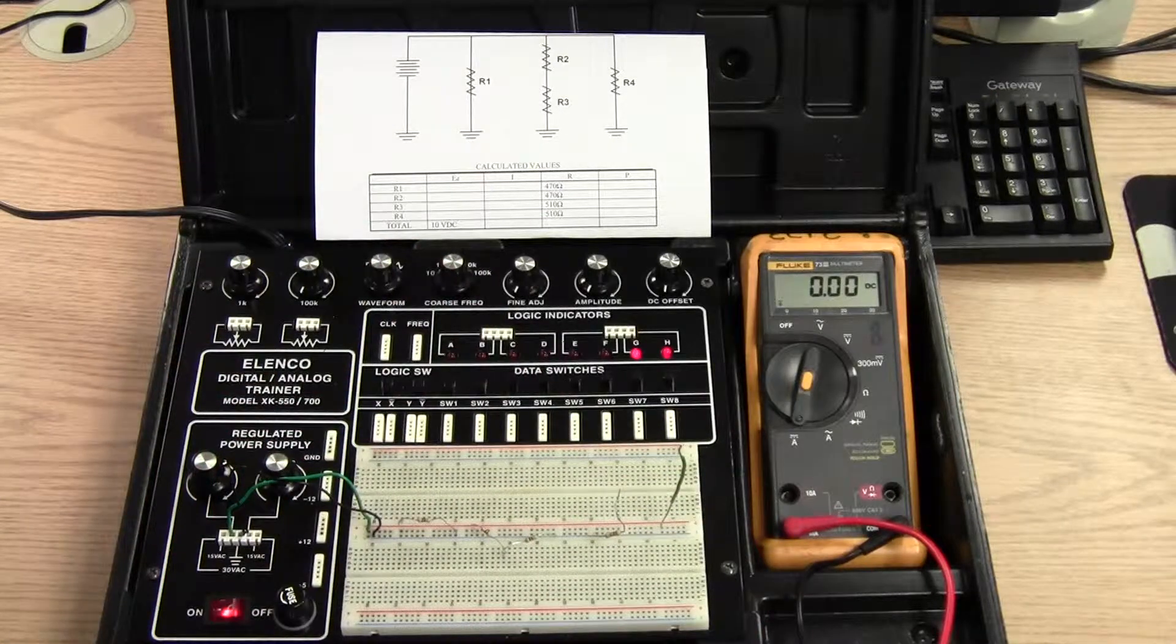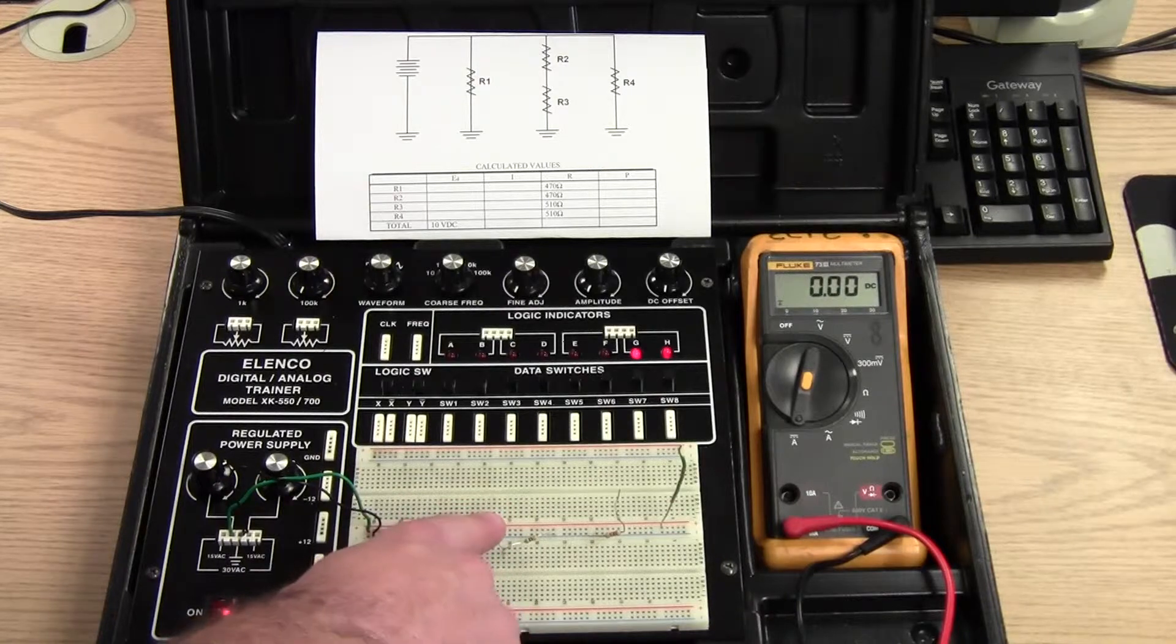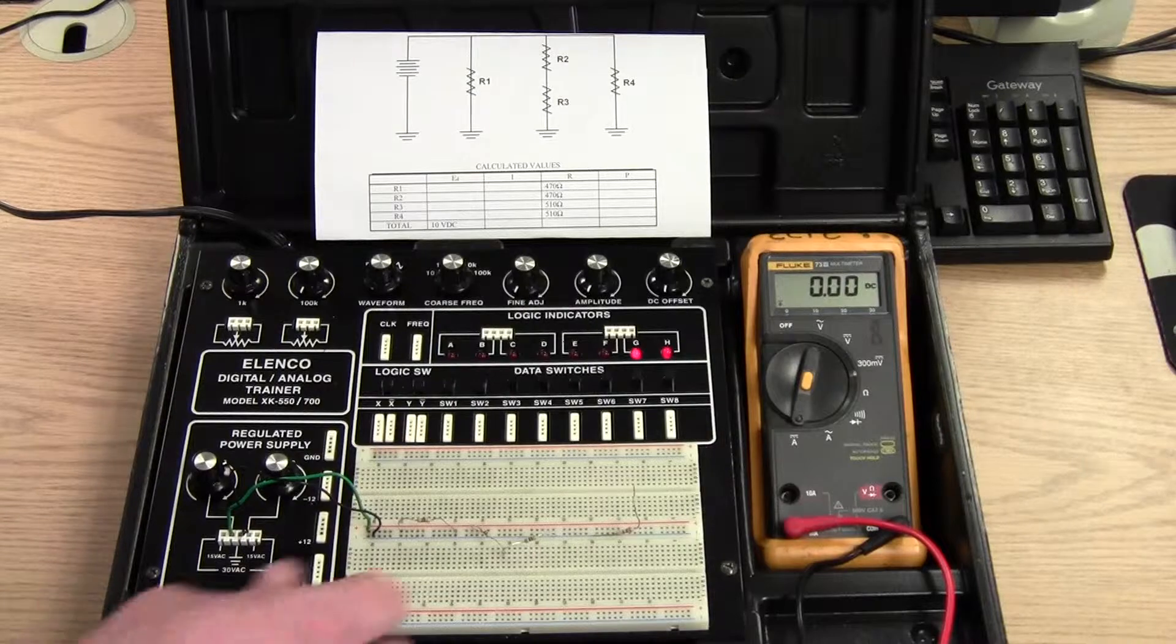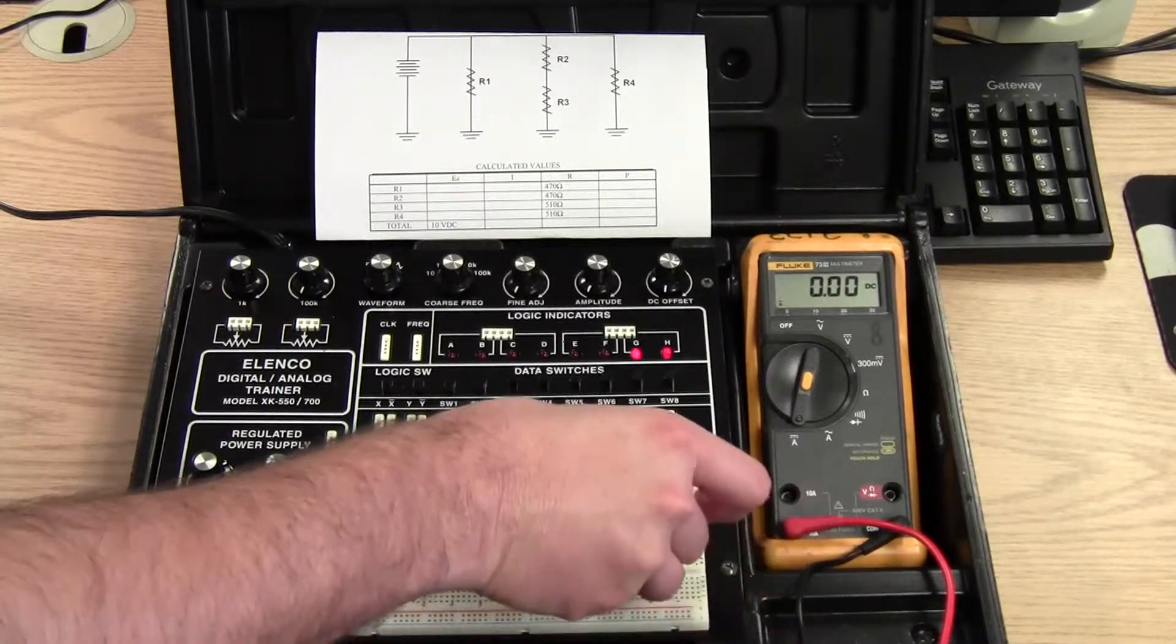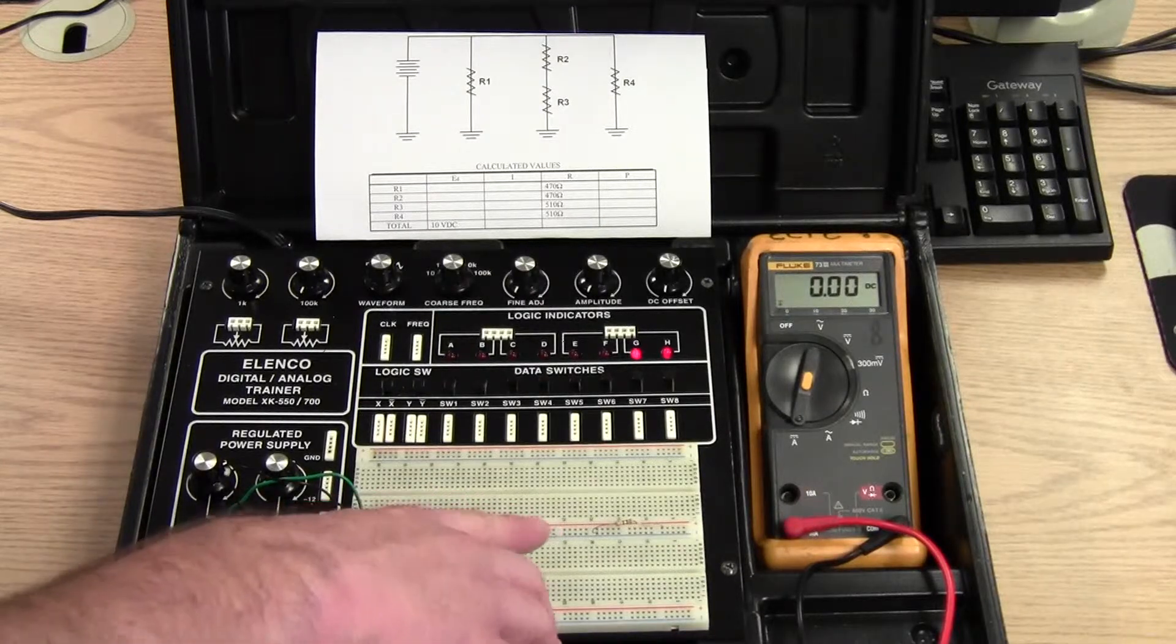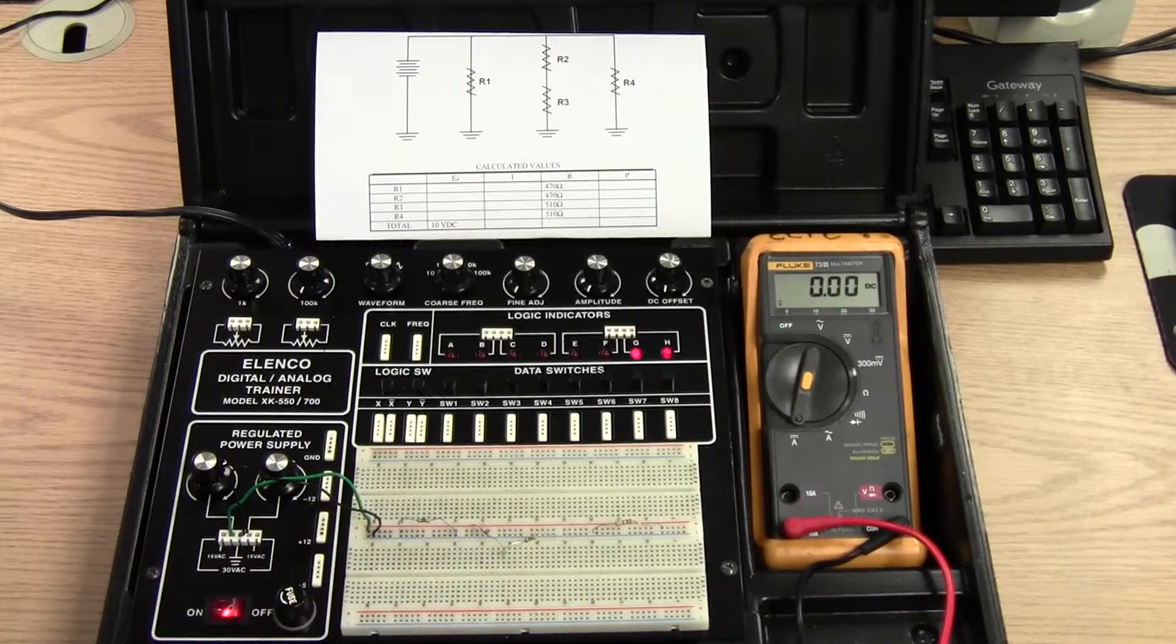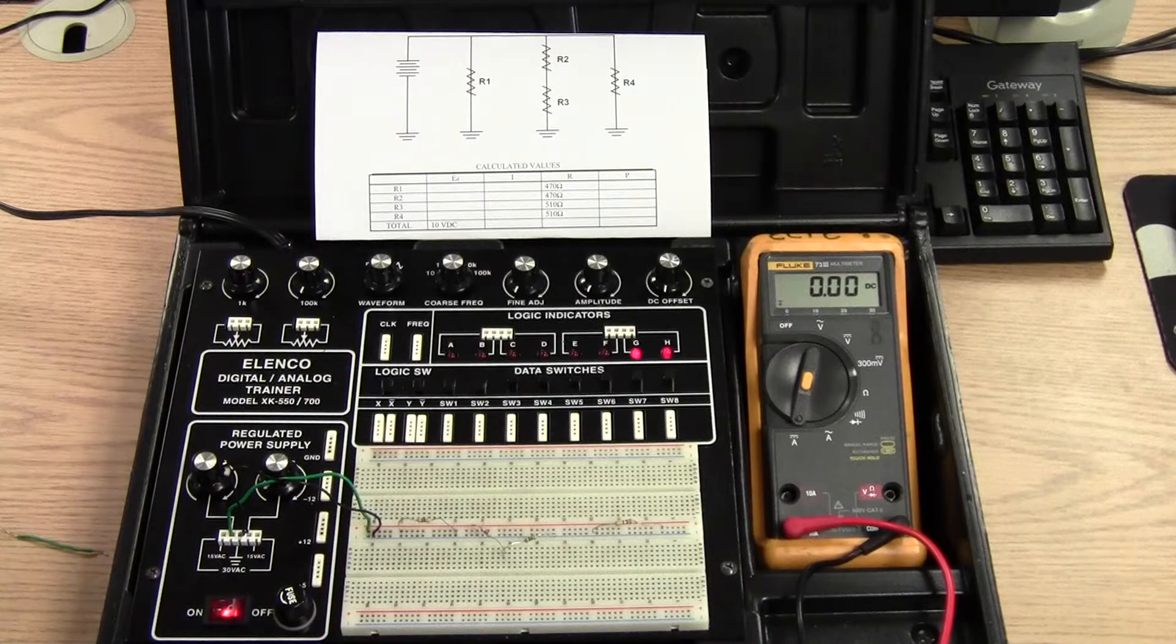So we add the current for R1, the current for R2, and the current for R4. Add them up and we get our total current. Notice I only said the current for R2. Because the current flowing through R2 is the same current that's flowing through R3. So you can't add it twice. And that is our combination circuit.